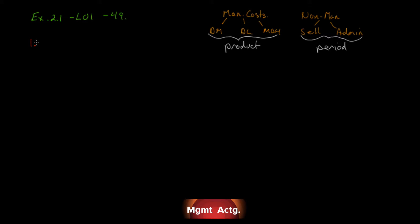For each cost, indicate whether it would most likely be classified as direct labor, direct material, manufacturing overhead, marketing and selling, or admin — those are our five categories. Number one: depreciation, taxes, and insurance on the manufacturing facility. Right away we know it's a manufacturing cost. Is it direct material? No. Is it direct labor? No. What's left? If you don't know what it is, eliminate by saying it's not labor or materials, so it must be overhead — manufacturing overhead.